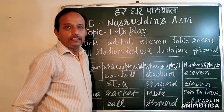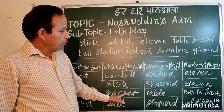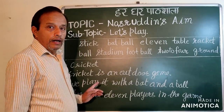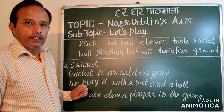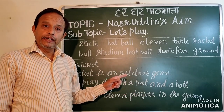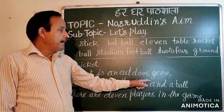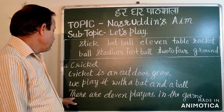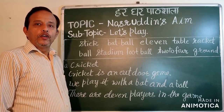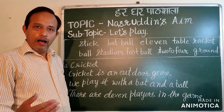Now we will do the next exercise which is related to this grid. We will write three lines about every game. This example is given. First: Cricket. Cricket is an outdoor game. We play it with a bat and a ball. There are 11 players in the game. Now we will talk about hockey, table tennis, and football — three lines each.